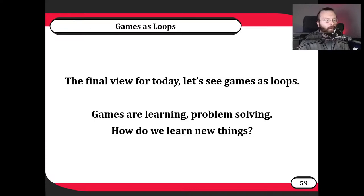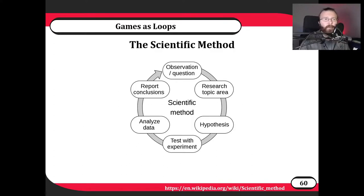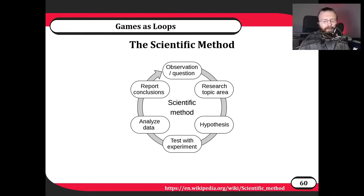For the final framework of today, we're going to look at games as loops. Games are about learning and problem solving — we talked about that earlier. How do we actually learn new things? A good place to look is the scientific method, developed specifically to solve problems and learn new things about the world. We start by observing or posing a question, do research, form a hypothesis, run experiments to test it, collect and analyze data, and report conclusions — which then gives us new questions.